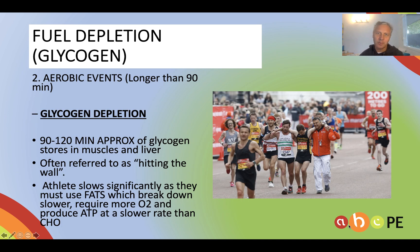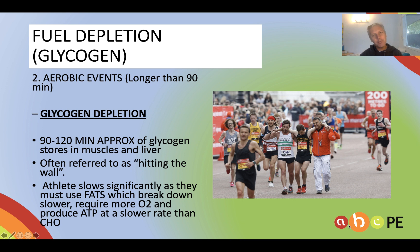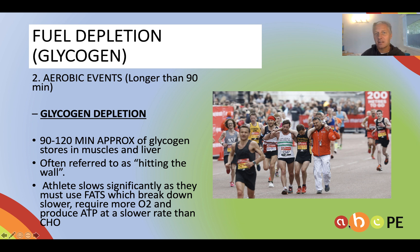The second part of fuel depletion is glycogen depletion. This happens in aerobic events that go beyond 90 minutes. We've got approximately 90 to 120 minutes of glycogen stores in the muscles and in the liver. If we run out of those, it's often called hitting the wall — you'll hear marathon runners say they hit the wall — and it means they slow down dramatically.